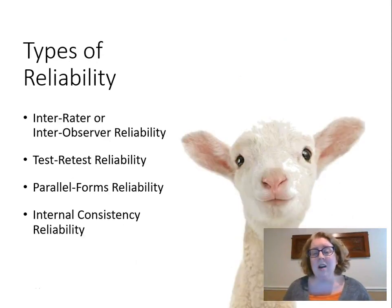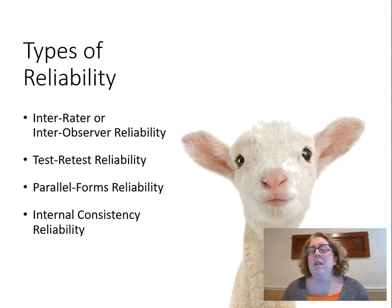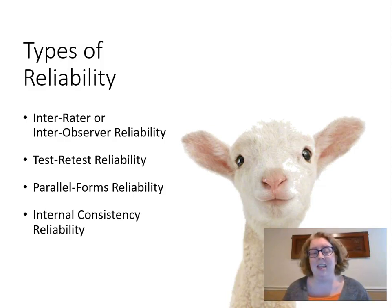We're going to talk about four types of reliability today: inter-rater or inter-observer reliability — this is one the textbook doesn't talk about, so pay special attention — then test-retest reliability, parallel forms reliability, and internal consistency reliability.